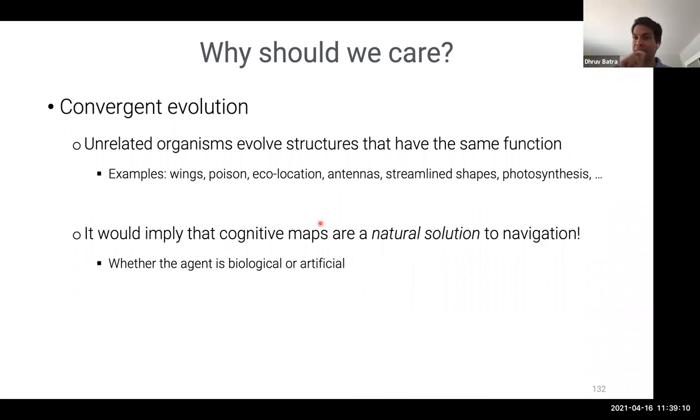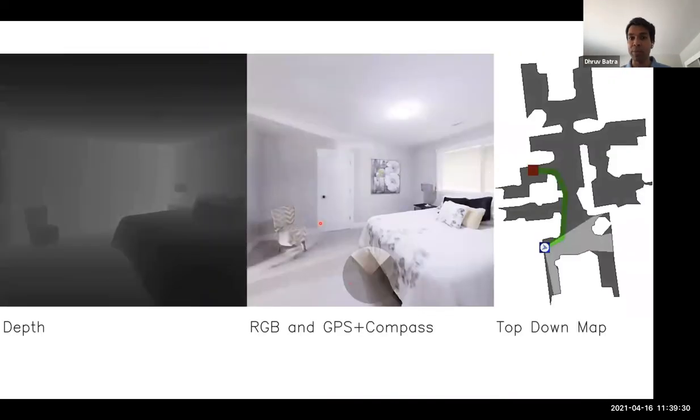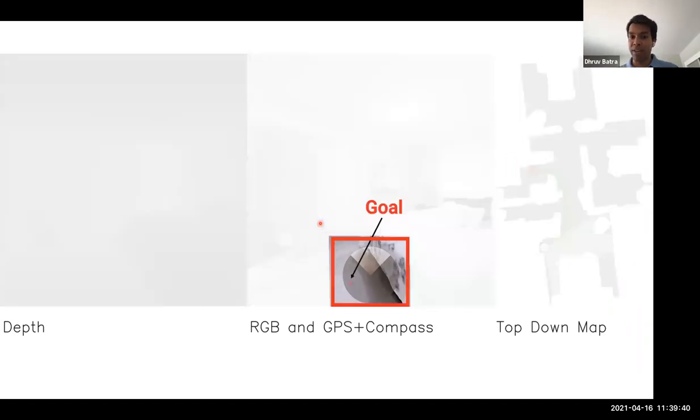And that tells us something about that problem. And so my argument is if we find evidence for cognitive maps in artificial systems that tells us that there's something about maps that are a natural solution to the problem of navigation, whether the agent navigating is biological or artificial. And so that I think is a deeper question. And that's why we should care. So we're going to do the same thing. The problem that we're going to solve is the same point goal navigation problem. The agent is still spawned in these environments, asked to go to a target, except this is going to be extreme navigation, extreme point goal navigation.